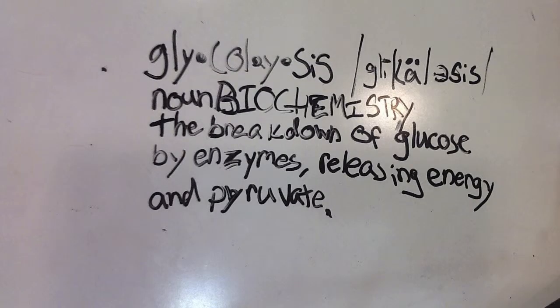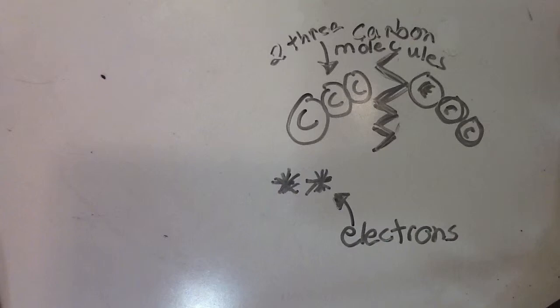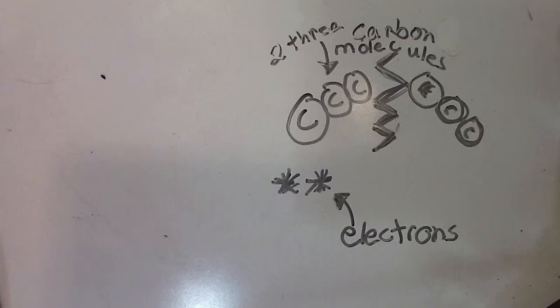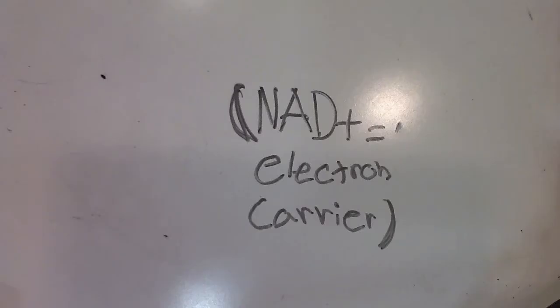Glycolysis, the breakdown of glucose by enzymes releasing energy and pyruvate. The breaking down of glucose releases two electrons which are added to the NAD+, creating NADH and H+. NAD+ is an electron carrier molecule essential to the cellular respiration process.